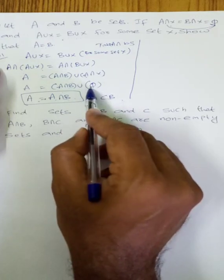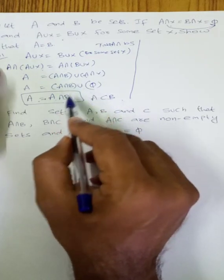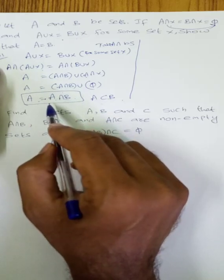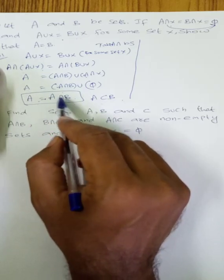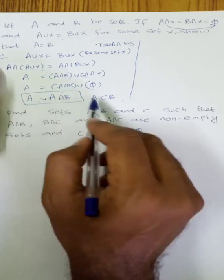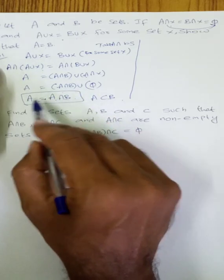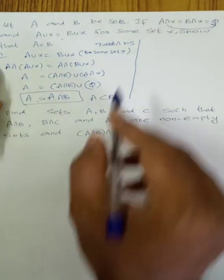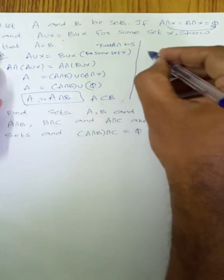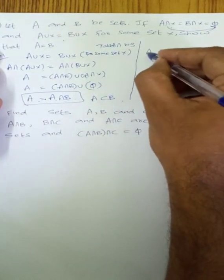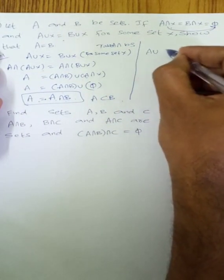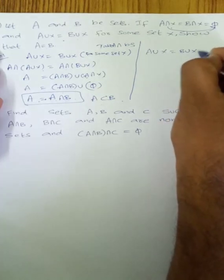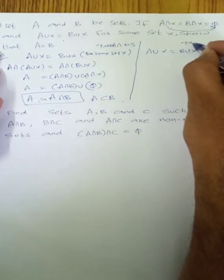A intersection (A union X) equals A. And A intersection (B union X) equals (A intersection B) union (A intersection X). Since A intersection X equals empty set, this gives A intersection B. Therefore A equals A intersection B, so A is a subset of B.